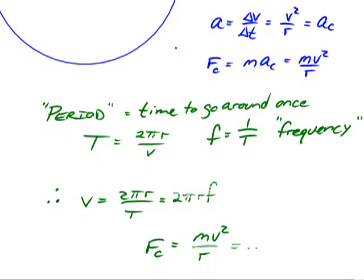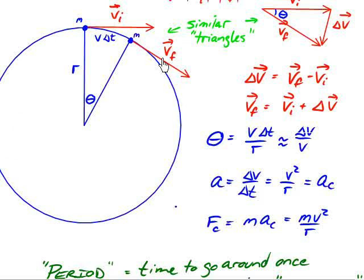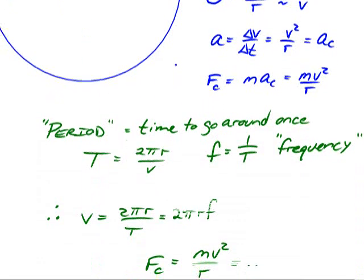Now we're going to derive a slightly different version of this using different variables, because when you have a string and you whirl a ball around on a string, you don't really have a good sense of how fast the ball is moving. But you do have a good sense of the period, that is, how much time it takes for it to go around. So let's introduce two variables here. One is capital T, which is what we call the period. By definition, it is the time for the mass to go around the circle once. And so time is distance over speed. And so the distance to go around the circle is the circumference of the circle, 2 pi r. And so the distance, 2 pi r divided by v, gives you the period.